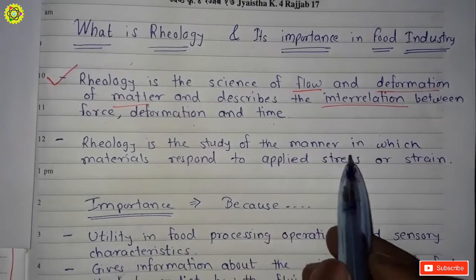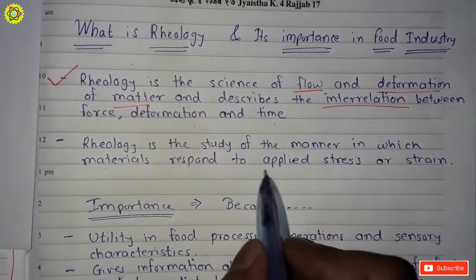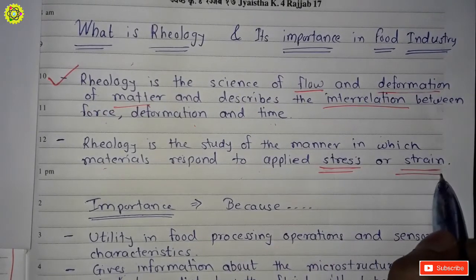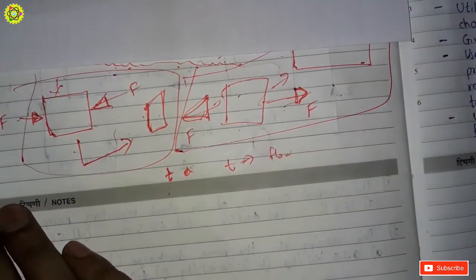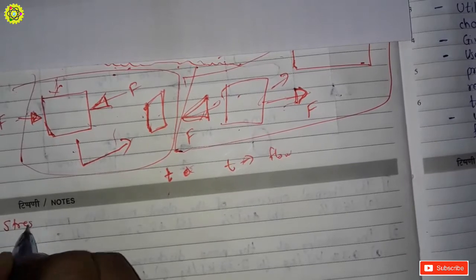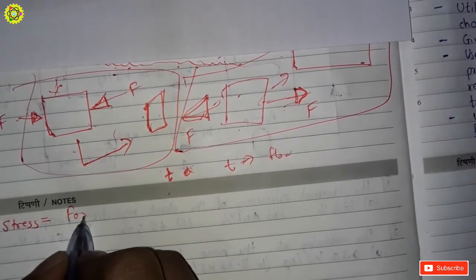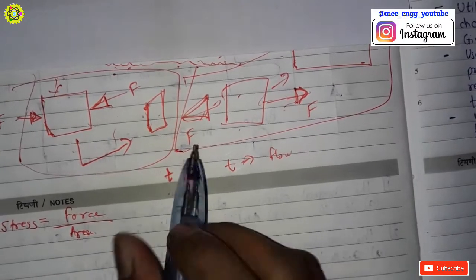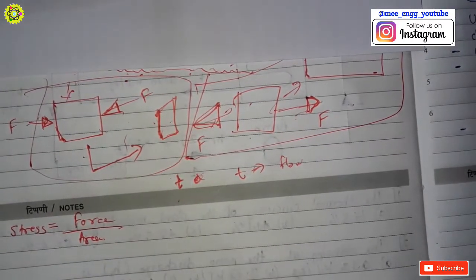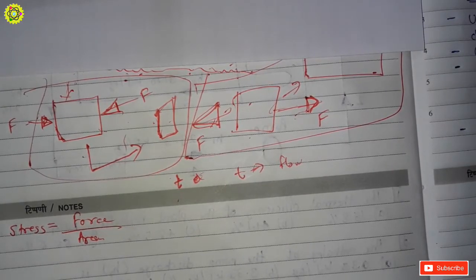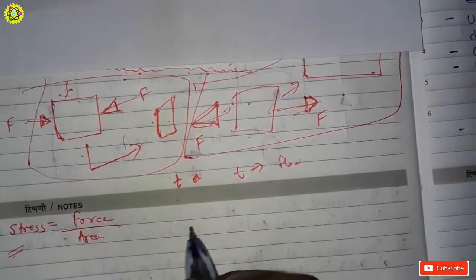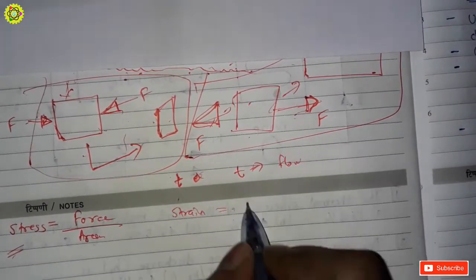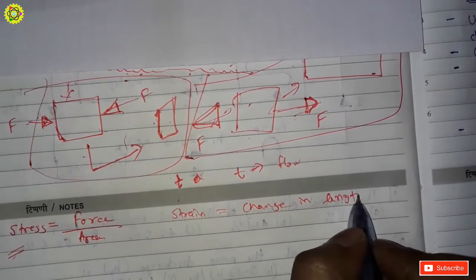Rheology is also the study of the manner in which material responds to applied stress and strain. Stress is defined as force divided by area — the area on which we apply compressive or pulling force, generating stress in that food substance. Strain is change in length divided by original length.